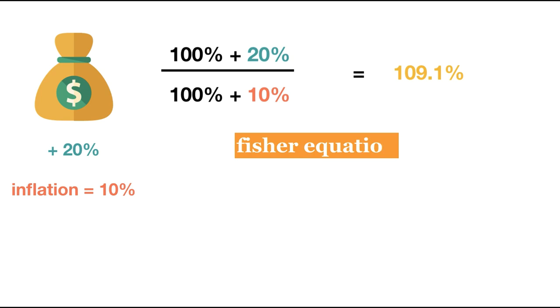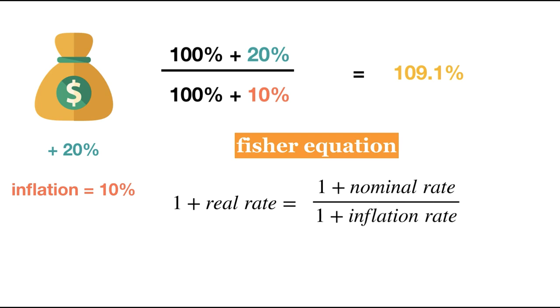We can express this logic as a general formula called the Fisher equation. Our real return is 1 plus our nominal rate divided by 1 plus our inflation rate, where our real return tells us by how much our purchasing power will increase. Recall that purchasing power tells us how far our dollar can go to buy things. The nominal rate is the percent return we earn on an investment, and the inflation rate is the percent increase in the price level, like the CPI.